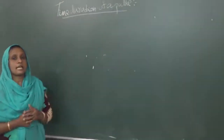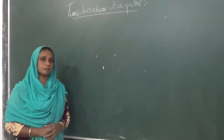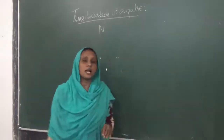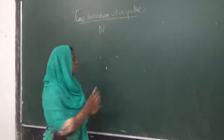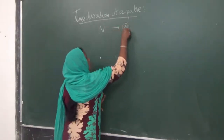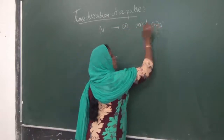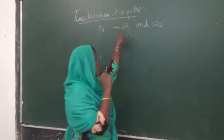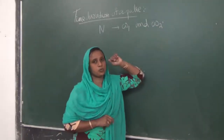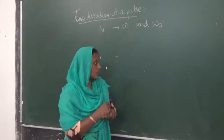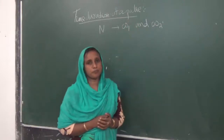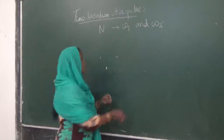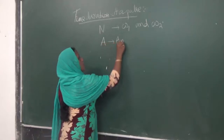Now we have to find out the expression for the time duration of a pulse. Assume that there are n frequency components. These frequencies lie between omega 1 and omega 2, where omega 1 is the lowest frequency and omega 2 is the highest frequency. Suppose that all these frequency components have the same amplitude A.